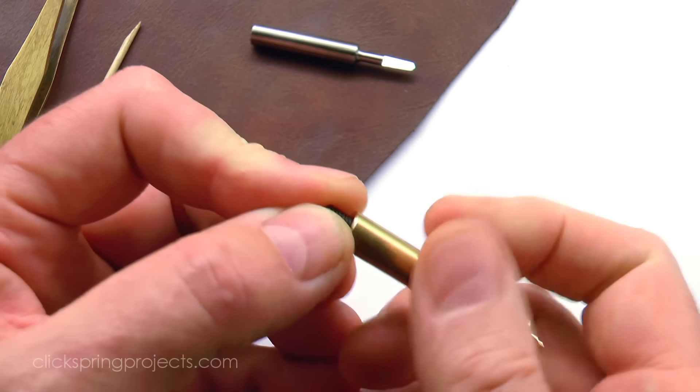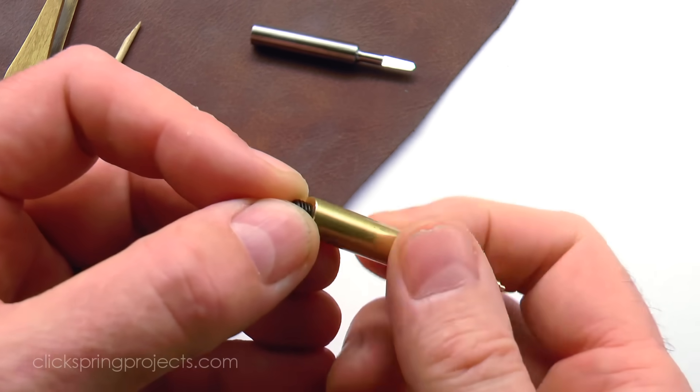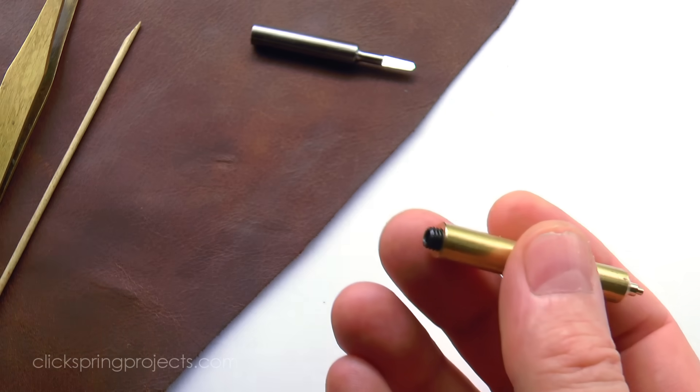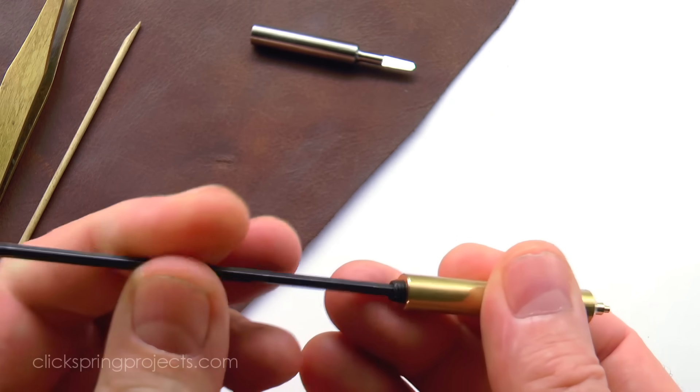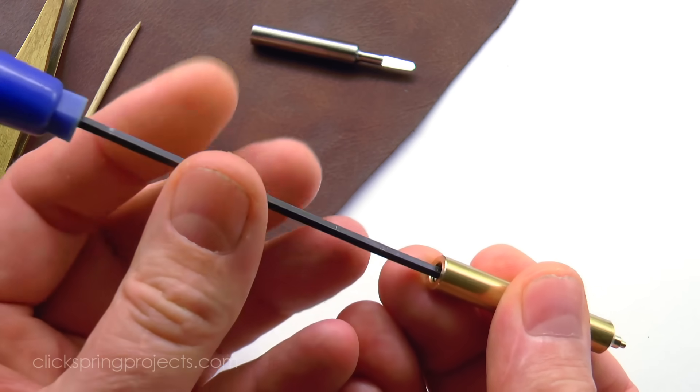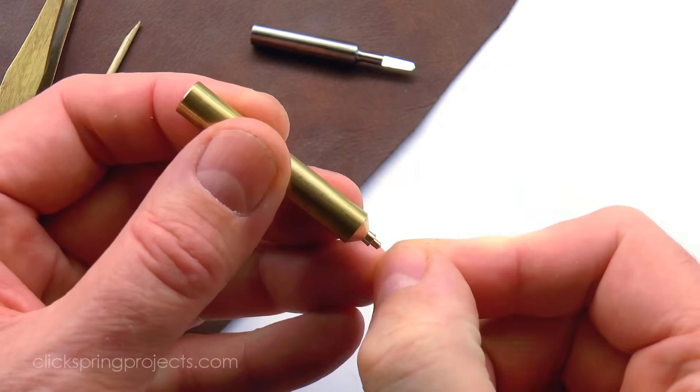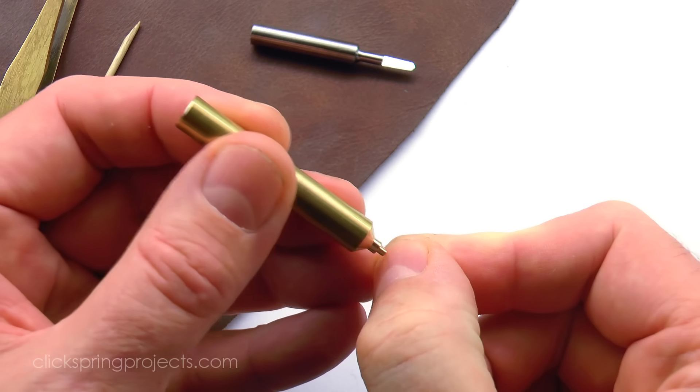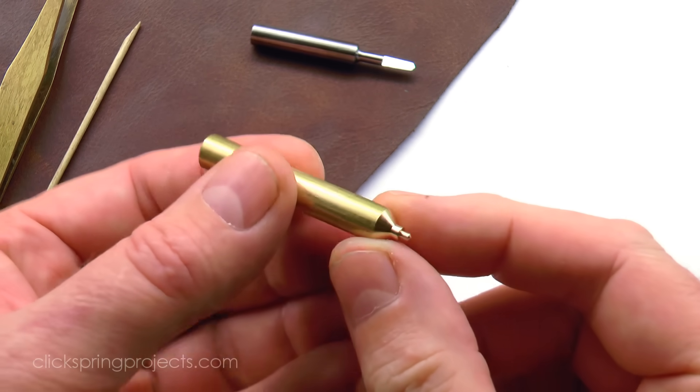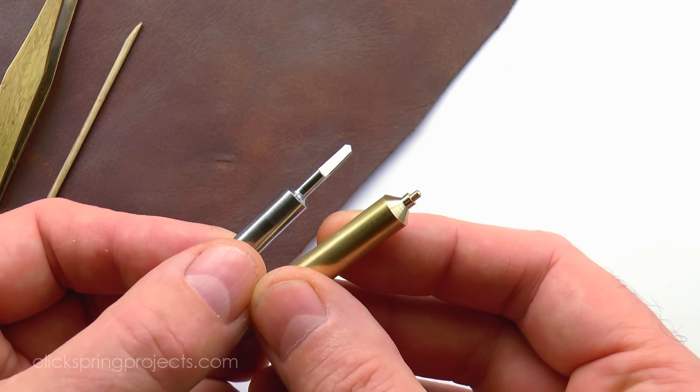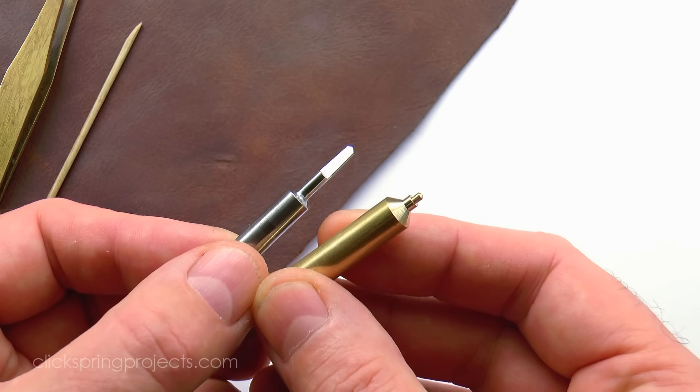Once the spring has been installed, the grub screw can be closed in as required to provide a light preload. The commercial tools move easily under a light pressure and also return back to their extended position with an immediate lively response. So let's give them a test in some scrap brass to see how they work.